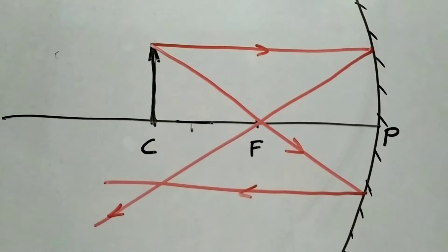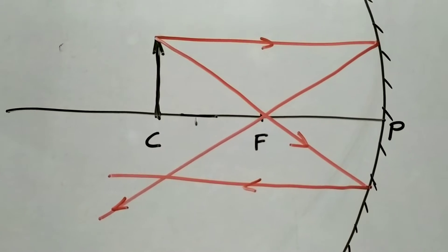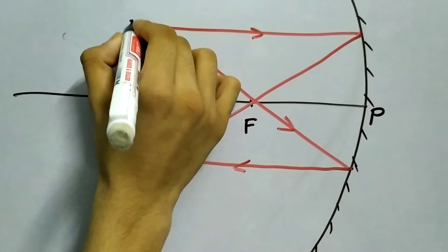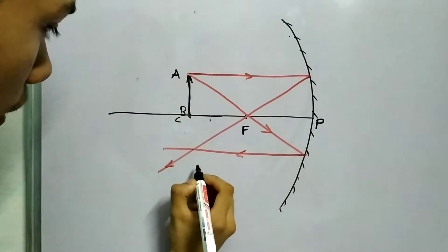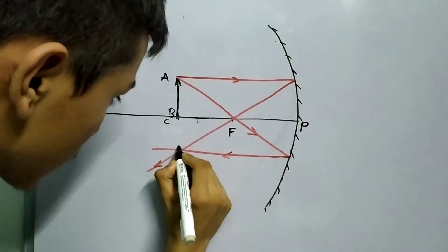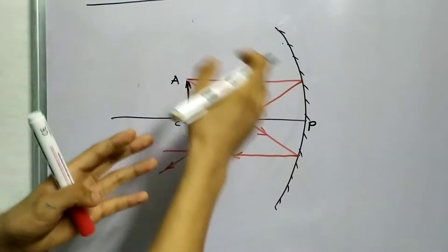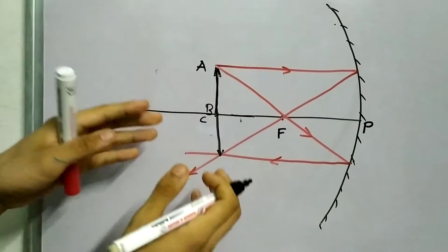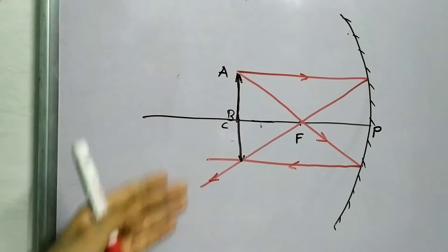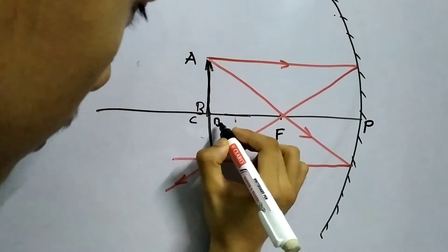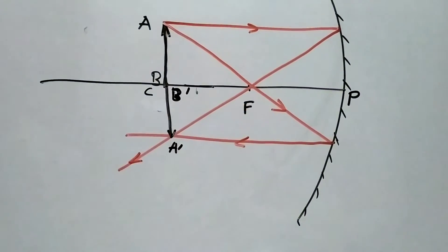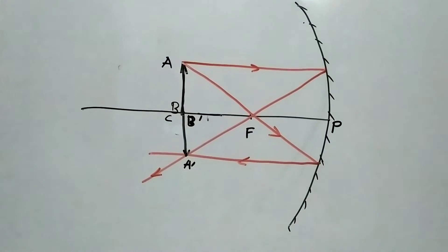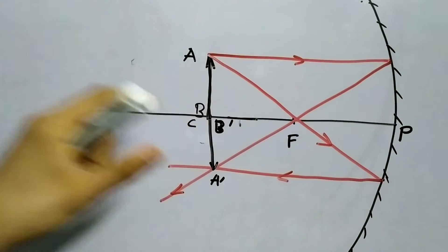Now how will the image be formed? This point A corresponds to A dash. That's how the image will form. Using freehand, it is very close to the center of curvature, but if you do it in a precise manner, the image is formed exactly at the center of curvature. So A maps to A dash, and B maps to B dash. If you notice, the sizes are approximately the same, and if you do it in a more rigorous manner using compass and scales, you will see that these two are equal.